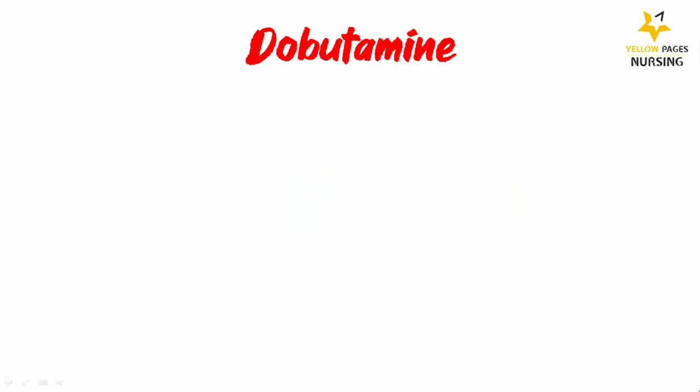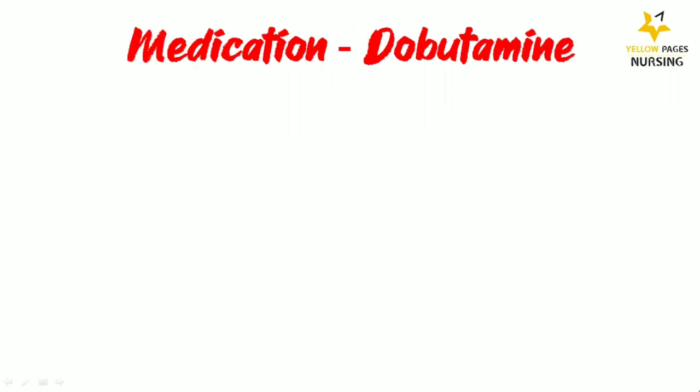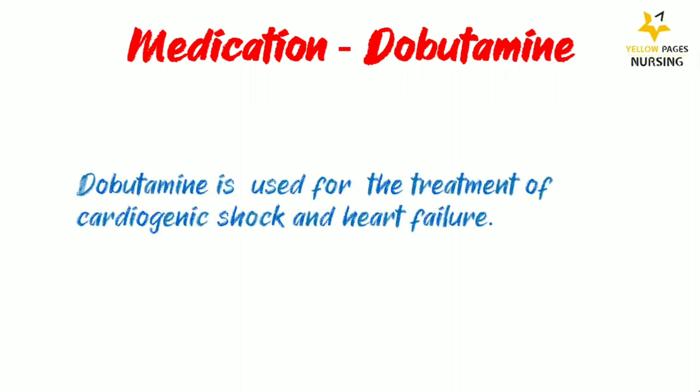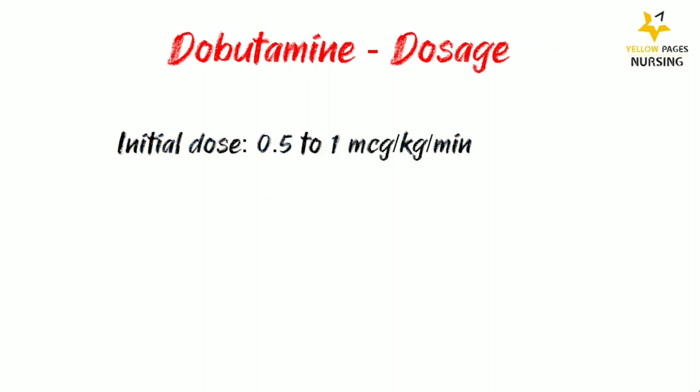Injection dobutamine comes under the inotropic agent category. It is used for the treatment of cardiogenic shock and heart failure. Dobutamine is given in two doses, starting with an initial dose ranging between 0.5 to 1 microgram per kg per minute.